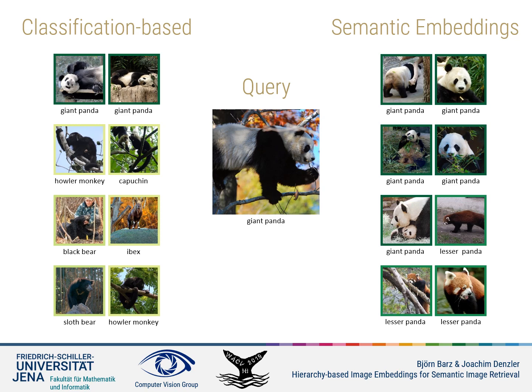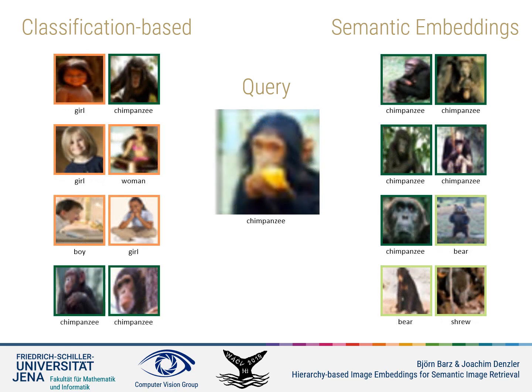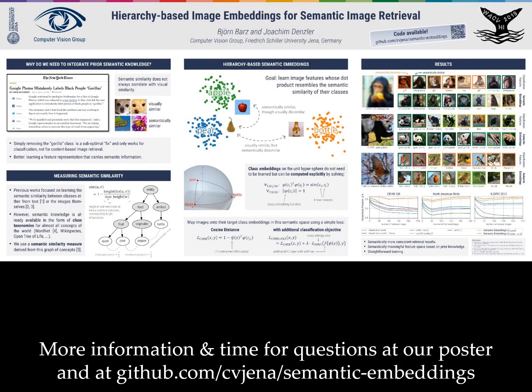This works similarly well for a query image of a chimpanzee. While classification-based features are prone to the usual mistake of returning images of humans as matches for this query, our semantic embeddings result in images of other chimpanzees first and then continue with images of other animals, but no humans, since these are in a completely different branch of the taxonomy. More information and source code are available online at github.com/cviena/semantic-embeddings.